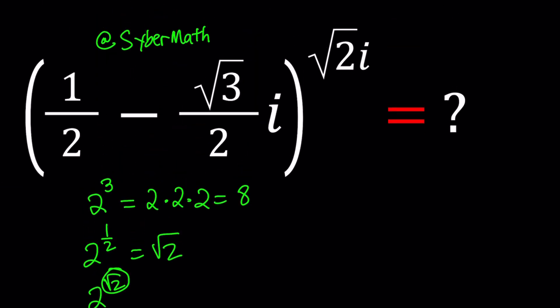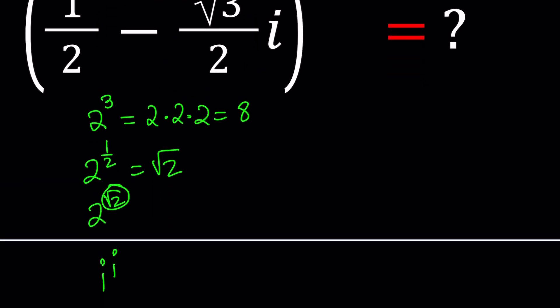So let's see how we can handle this. To simplify this expression we're going to take advantage of Euler's formula because Euler is the greatest. He is awesome, by far the best. So we're going to use that. In other words, we're going to write this complex number in polar form.